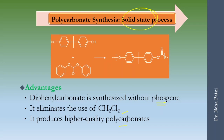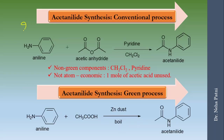The second example is acetanilide synthesis. Acetanilide is benzene with an NHCOCH₃ group. For that acetylation, many reagents are available — acetic anhydride, acetic acid, acetyl chloride, etc. The conventional process uses acetic anhydride along with pyridine and methylene chloride, which are non-green compounds. In that reaction, one extra mole of acetic acid is released as a byproduct.